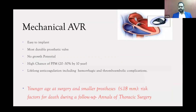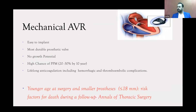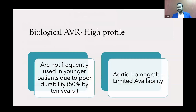Mechanical AVR is easy to implant and most durable, but there is no growth potential, especially in younger individuals, with a high chance of patient-prosthesis mismatch — about 20 to 30% by the end of 10 years. A recent paper from the Annals of Thoracic Surgery noted that younger age at surgery and smaller prostheses are risk factors for death during follow-up after mechanical AVR. Biological valves are not frequently used in younger individuals; durability is questioned — only 50% durable by 10 years. Aortic homograft has limited availability in our country.